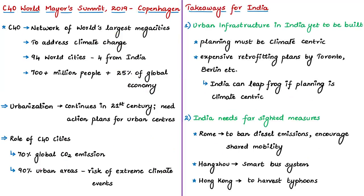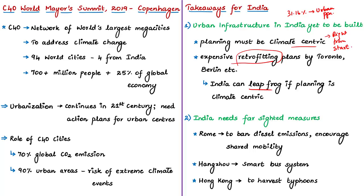India still has only 31.16% of its population in urban areas, meaning much of its urban infrastructure remains to be built compared to developed-world cities. This is an opportunity for Indian policymakers to ensure future planning is climate-centric. At the summit, mayors spoke about expensive plans to retrofit urban infrastructure for energy efficiency. India need not repeat this cycle — if it builds climate-centric infrastructure from the start, it can leapfrog the era of dirty fuel.